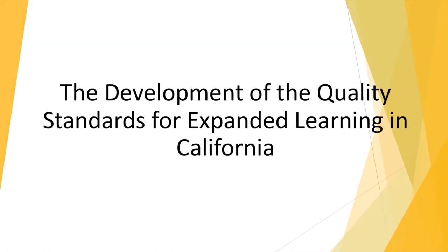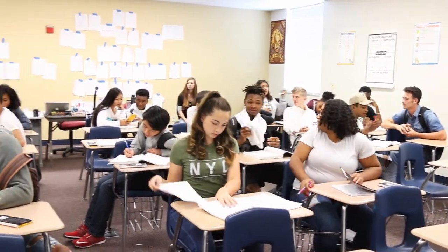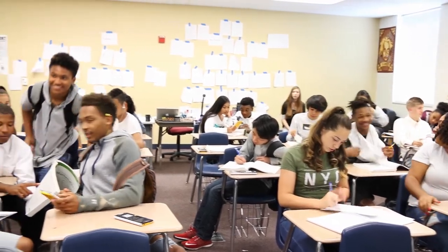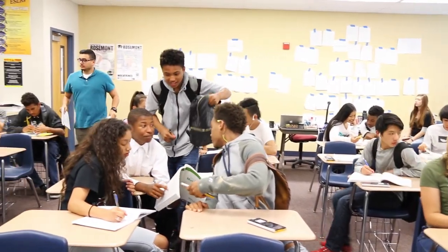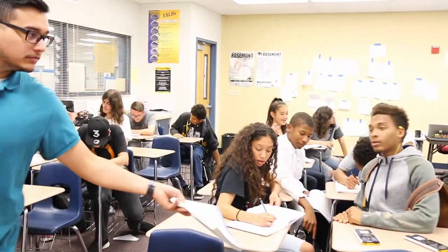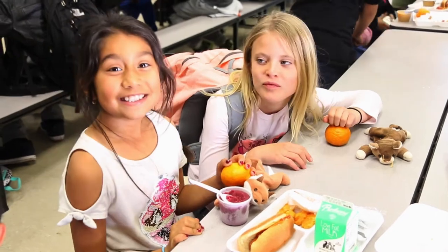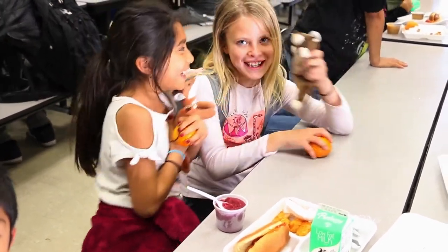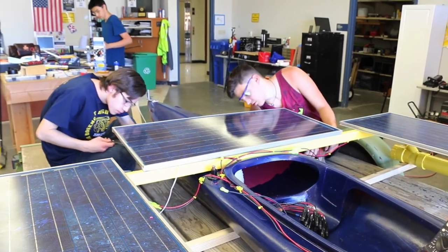Let's begin by discussing the development of the quality standards for expanded learning in California with Jessica Haidt, program director for the California After-School Network. The quality standards were created in September 2014 — created by the field, for the field — in partnership with the California Department of Education expanded learning division and the California After-School Network quality committee. The quality committee work groups did not create the content of the standards in a vacuum; they consulted program quality research and evaluation experts and reviewed a variety of youth program quality standards and assessment tools from across the country.